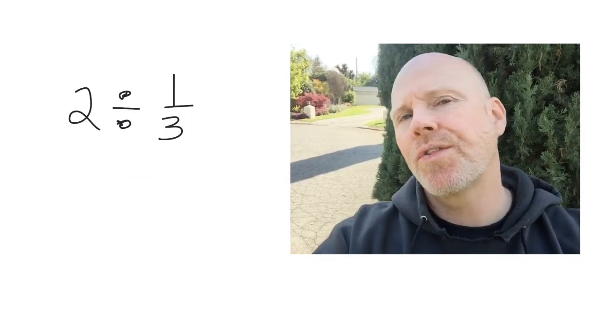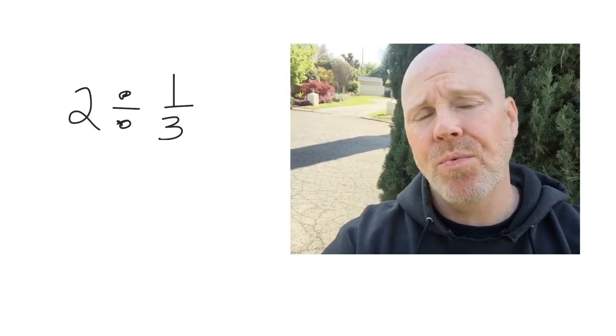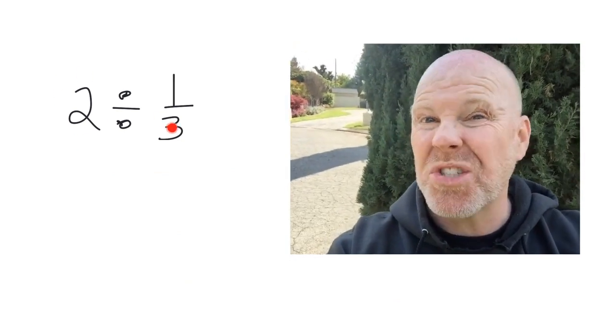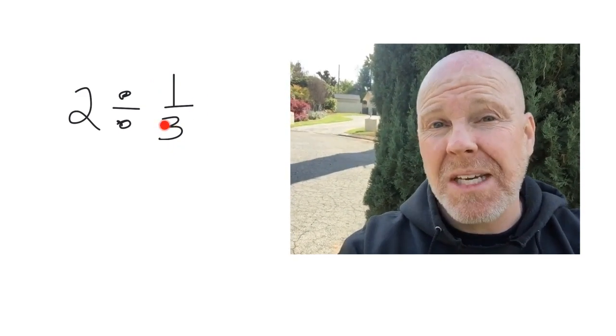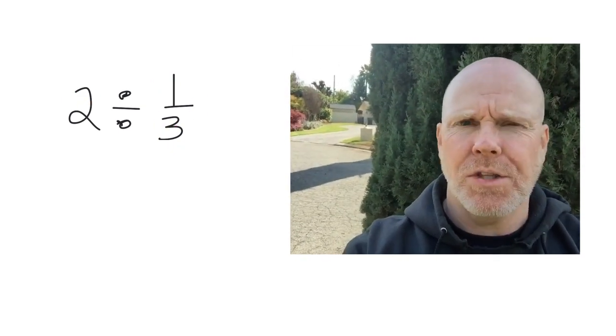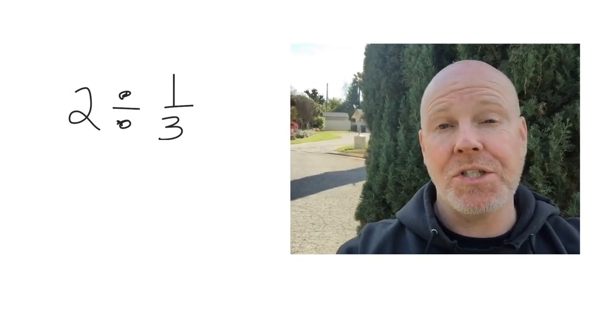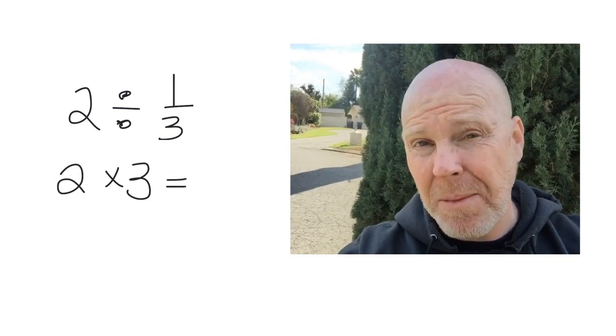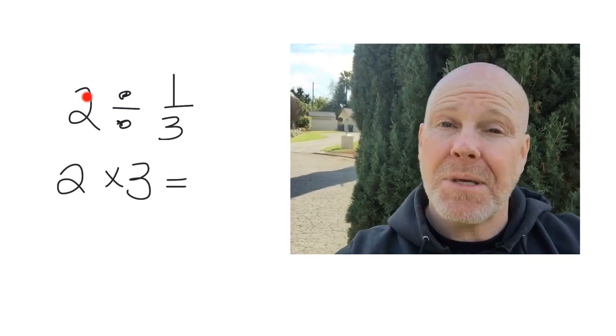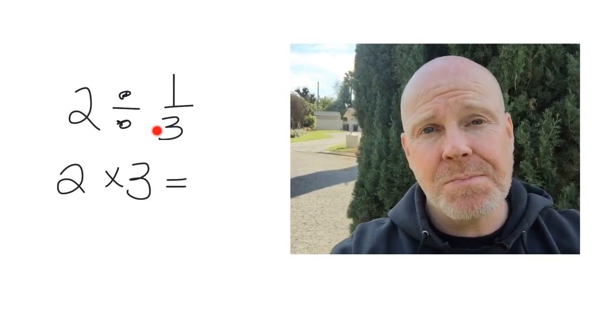So that wraps up this lesson where we are dividing whole numbers by unit fractions. And it turns out all we have to do is multiply those two main numbers. Really, we're finding the reciprocal of that second fraction and then multiplying. But basically what we're doing is multiplying the whole number by the number of pieces that each hole is being cut into.